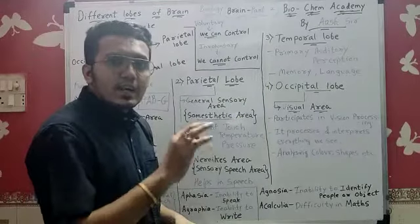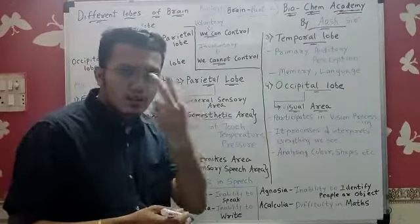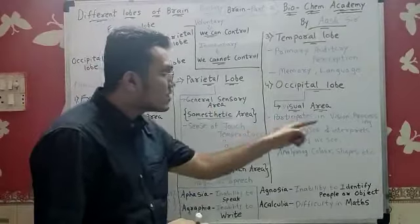Occipital lobe. Finally, the last lobe of brain. Occipital lobe: visual area. It participates in vision processing. What have you seen?